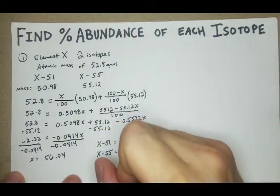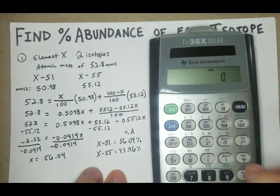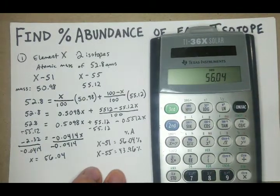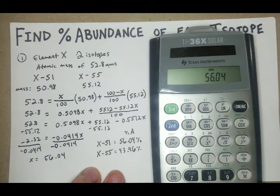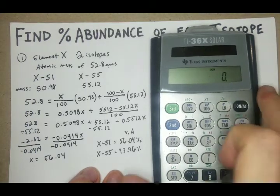Now we have the answer, but there's two checks that I like to do that are pretty quick. One of them is just the percentage add-up. Check that these percentages add up, because if they don't, then something went really wrong. 56.04 plus 43.96 equals 100. Good on that.